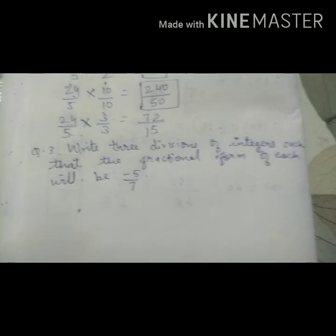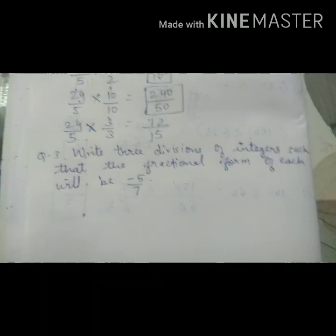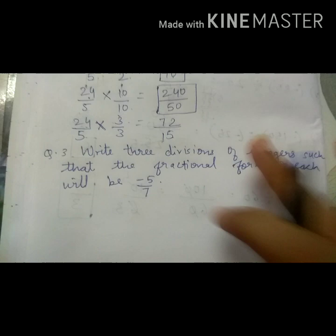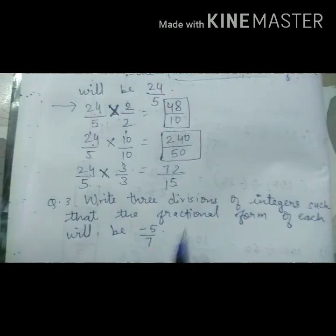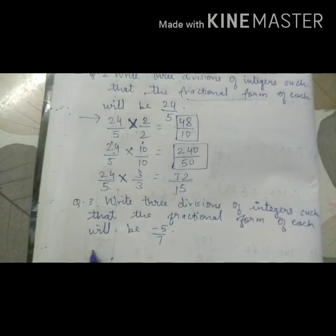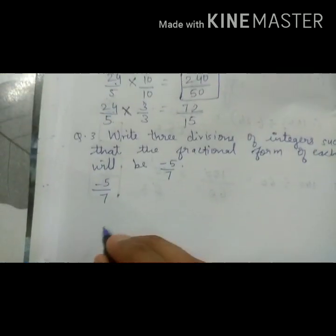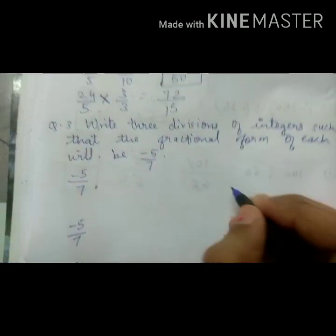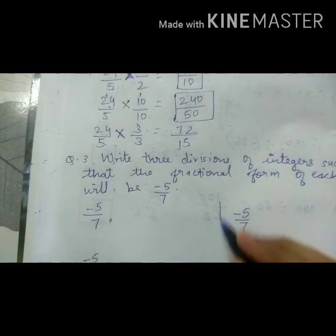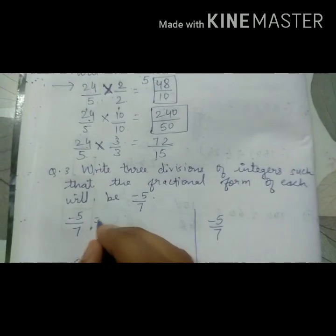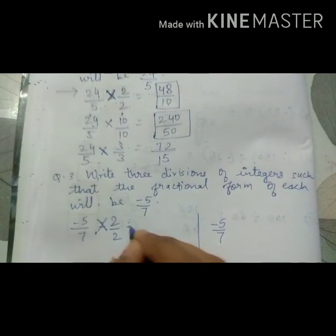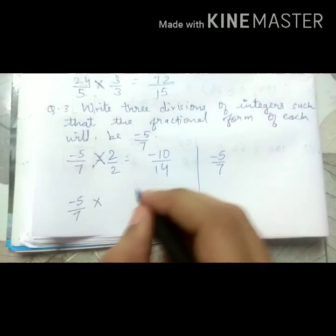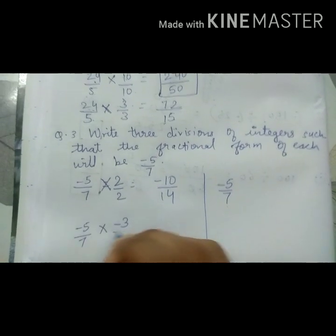Our next question is also same. Write 3 divisions of integers such that the fractional form of each will be minus 5 upon 7. Same like previous one. Answer should be minus 5 upon 7. So minus 5 upon 7 I am writing 3 times. Here I am multiplying again with 2 numerator, denominator both. Here I am multiplying again with 3. Let's take minus 3.